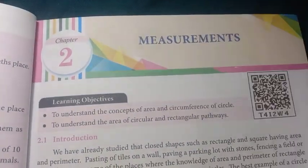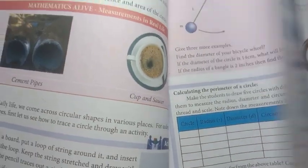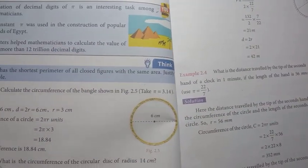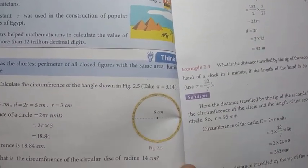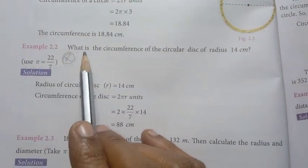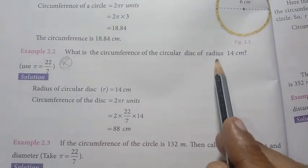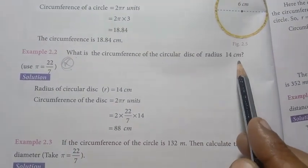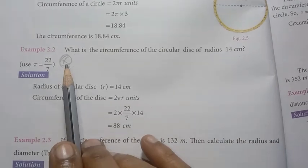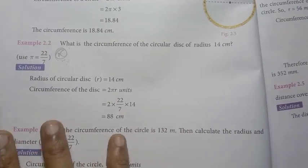Chapter 2: Measurements. Page number 24, Example 2.2: what is the circumference of a circular disc of radius 14 centimetres? This question has appeared in previous question papers — Example 2.2 is important.